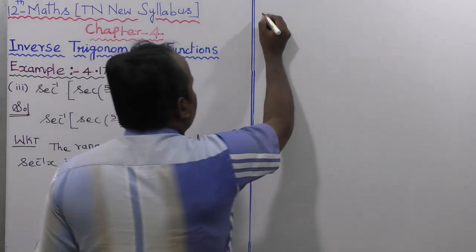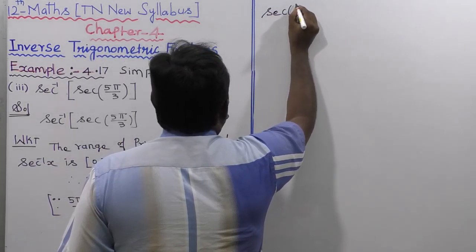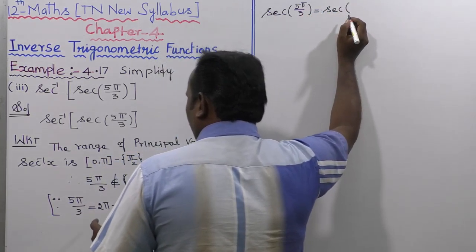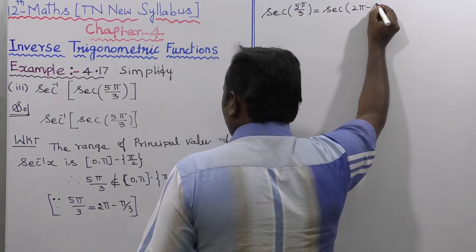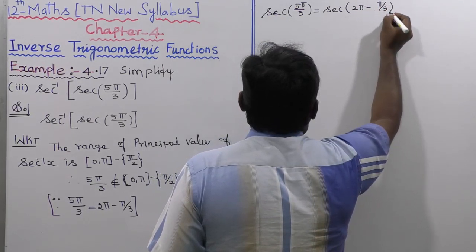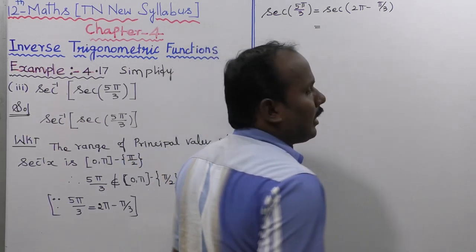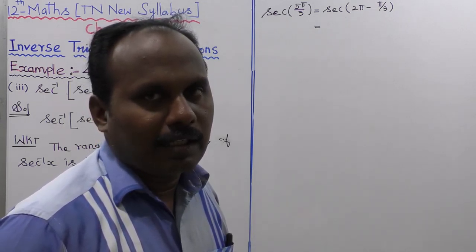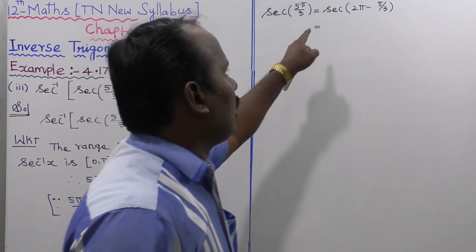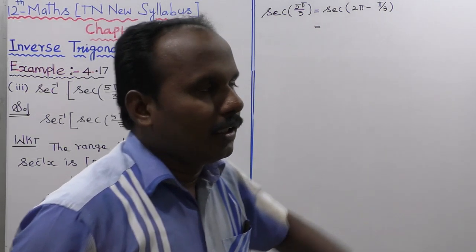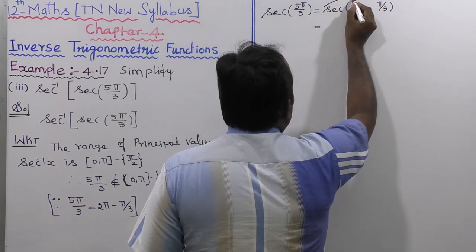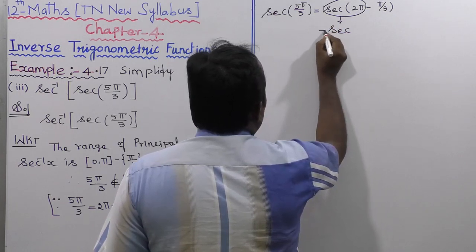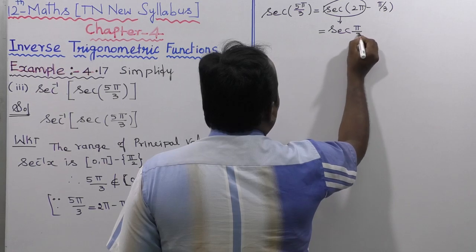Next, secant of 5π/3 equals secant of (2π − π/3). Since 2π − π/3 is in the 4th quadrant, and in the 4th quadrant cosine is positive, and secant is the reciprocal of cosine, secant is also positive. Therefore, secant of 2π − π/3 equals secant of π/3.